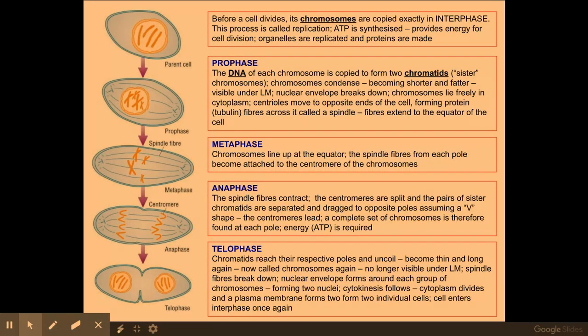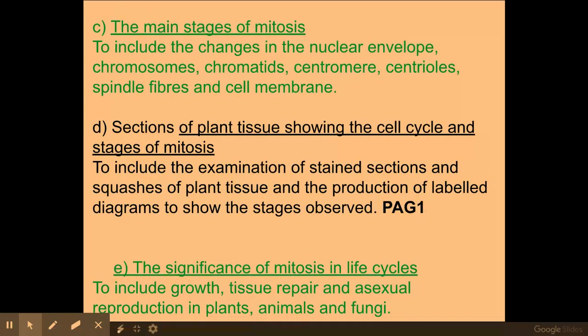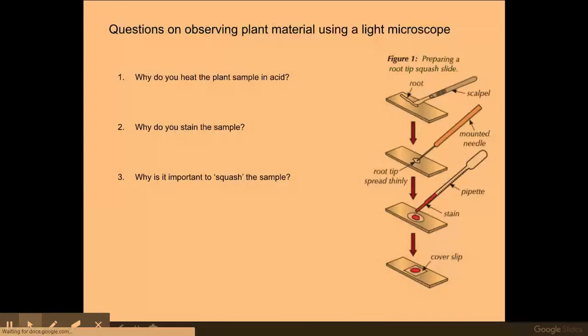This is an overview of the stages of mitosis — PMAT — if you want to pause and have a read. Now we're going to take a quick look at the root tip squash experiment. In this experiment, we take a root tip, normally from garlic or an onion. It's important we use a root tip because in the growing root tip, mitosis should be occurring, so we take the sample from the end of a root.